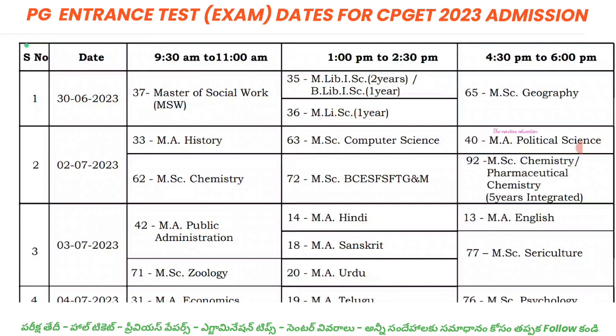For example, if you have applied for MA History, MA Political Science, MSc Chemistry, and MSc Computer Science, we will get two or more papers applied on the same date and same timing.